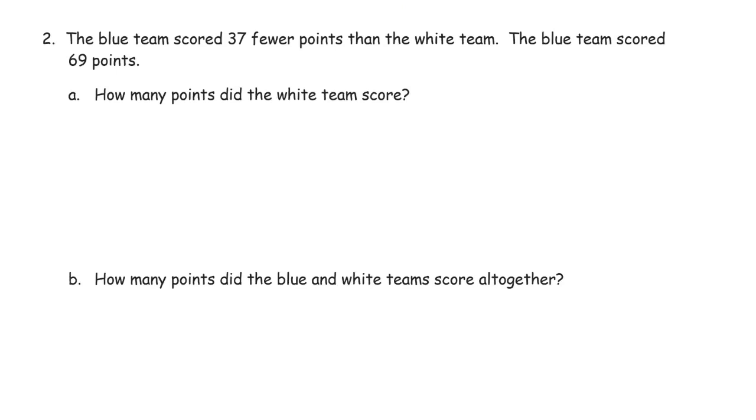The blue team scored 37 fewer points than the white team. The blue team scored 69 points. How many points did the white team score? Draw a tape diagram. Really. Draw a tape diagram. Because otherwise, you're going to see 37 and 69, and you're going to add them together. And right away, you skip the first part of RDW, if that's what you're doing. Because you didn't read. Draw the picture first, before you do any adding or subtracting. Don't try to solve the whole thing in your head, and then draw a picture later, because you'll end up drawing a picture of your own wrong answer. And that won't help you. Draw the picture first.